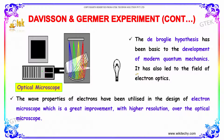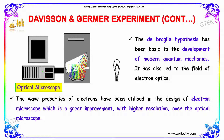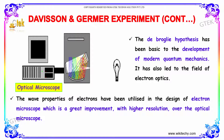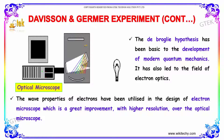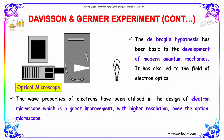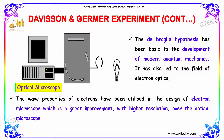The de Broglie hypothesis has been fundamental to the development of modern quantum physics and mechanics. It has also led to the field of electron optics. The wave properties of electrons have been utilized in the design of the electron microscope, which achieves a much higher resolution than optical microscopes.